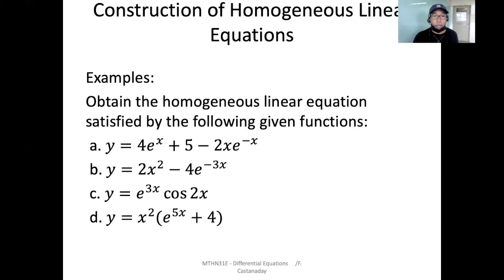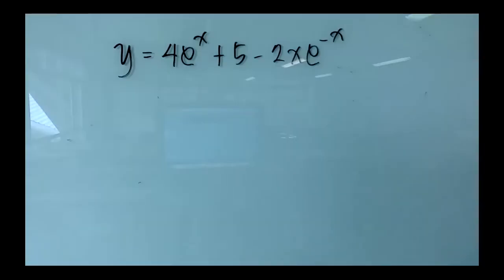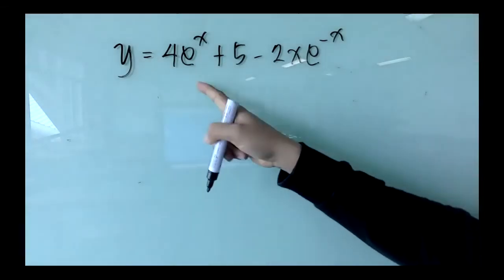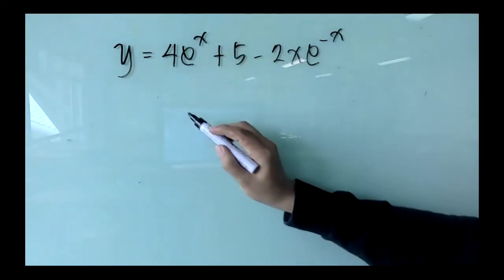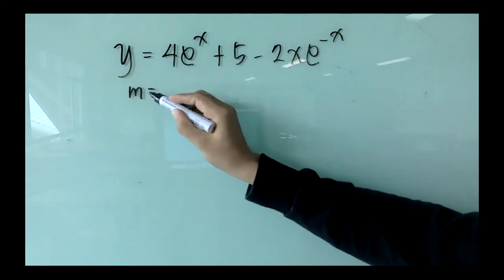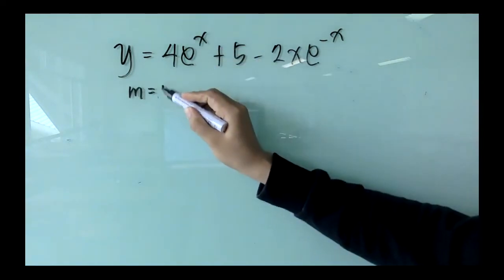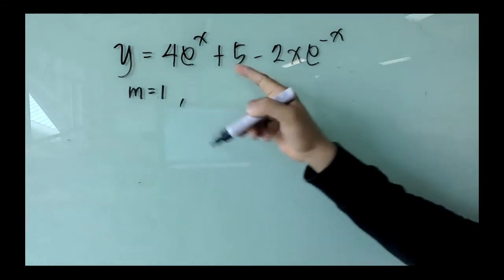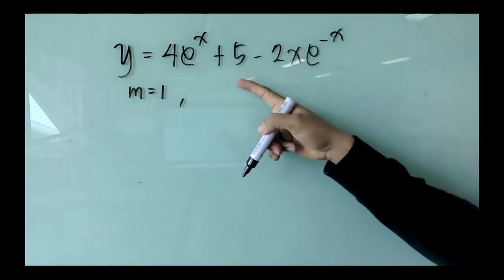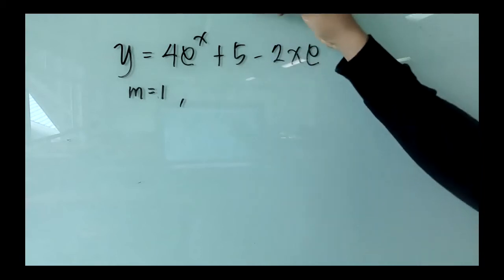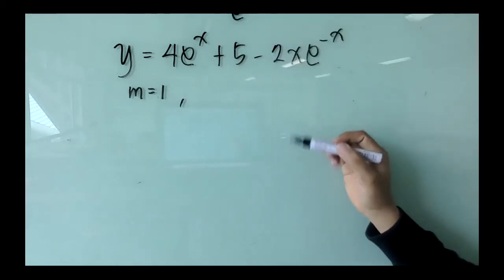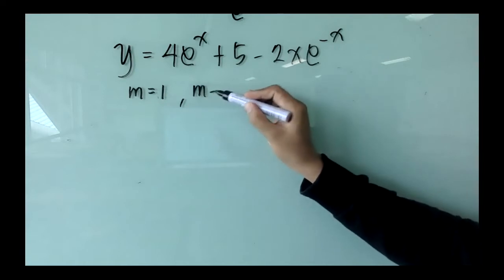Let's try example A: y = 4eˣ + 5 - 2xe⁻ˣ. Looking at the first term, we have 4eˣ, so eˣ means that we have a root of the auxiliary equation equal to positive 1. For the second term, the constant 5 means the exponential function here is e raised to 0, so the root is equal to 0.